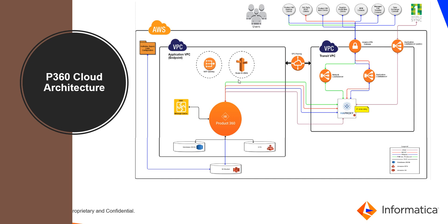Two internal components used at the network layer are the NAT gateway and Route53. These ensure that traffic is only sent outbound to the internet, and that internet traffic is not allowed directly into the P360 server, since it resides in a private subnet. The application VPC is not directly exposed to the internet or gateway — only the load balancers use a VPC peering concept to connect with the private VPC. The two optional components are OneVault Sync and HAProxy for IP whitelisting.